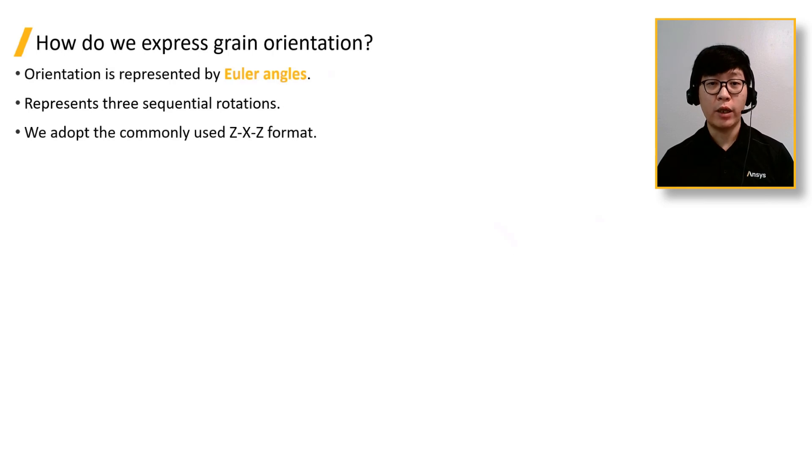And how should grain orientation be represented? Orientation is typically expressed by Euler angles, which are a sequence of three angles to describe the orientation of a body with respect to a fixed coordinate system.